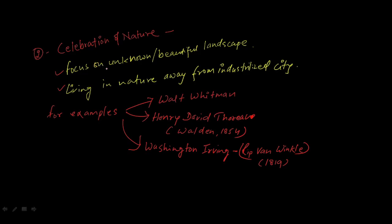The difference between Romanticism in Europe and America was of poems and prose as well. You will see the celebration of nature in works like Walt Whitman, Henry David Thoreau's famous work Walden which got published in 1854, and Washington Irving's Rip Van Winkle in 1819.